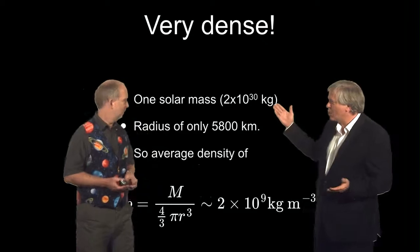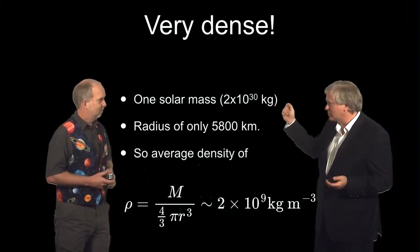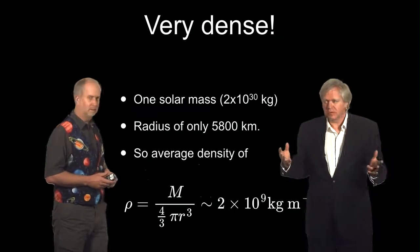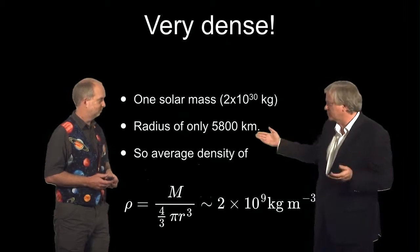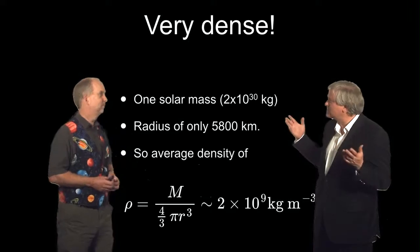That's absolutely amazing. You have something that weighs as much as the sun, so 2 times 10 to the 30 kilograms, and the radius that you just calculated, assuming it's a black body, and that's what stars are to first order, is only 5,800 kilometers. That's less than the radius of the Earth.